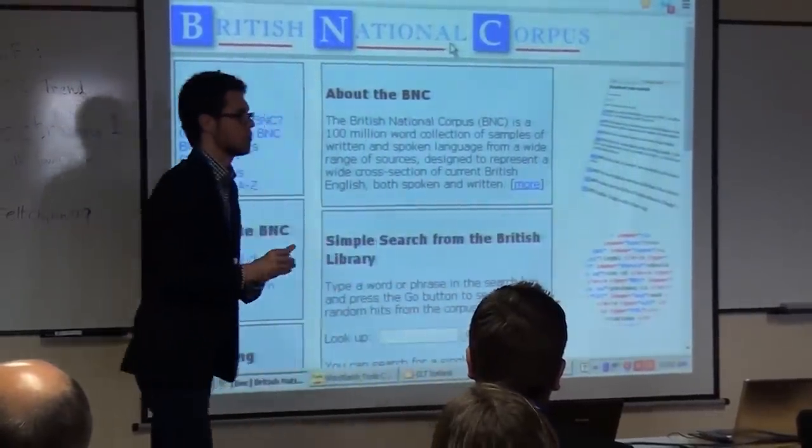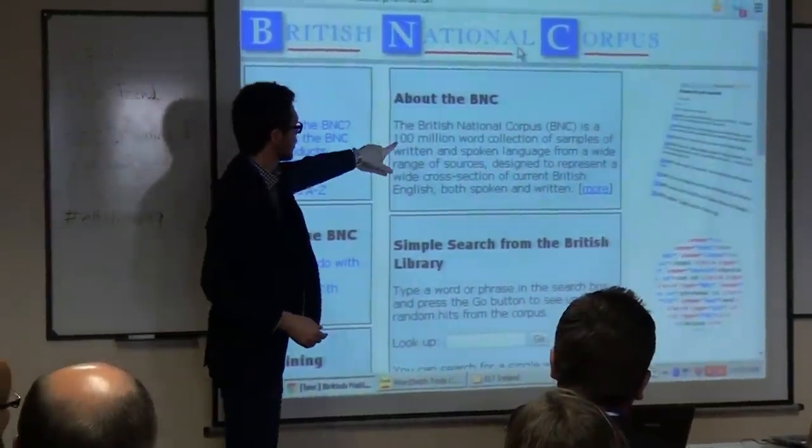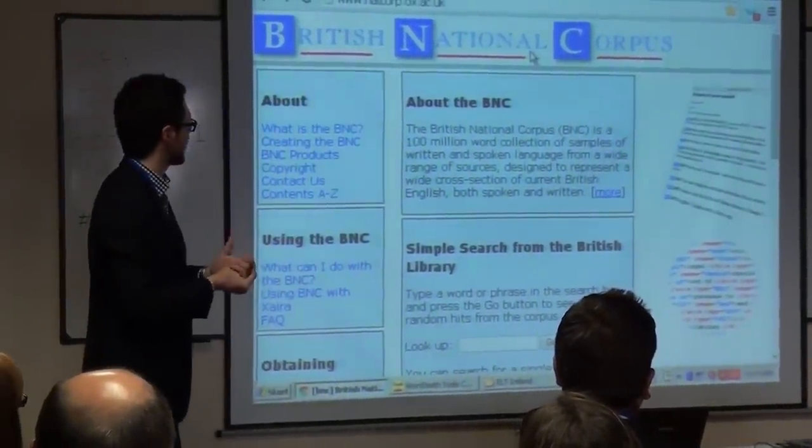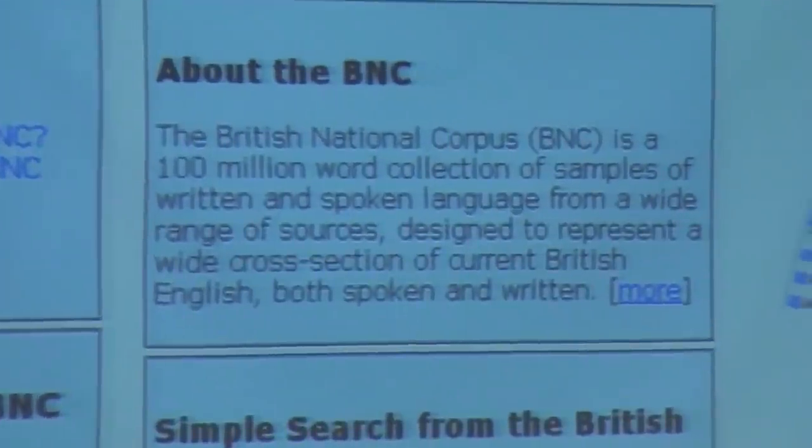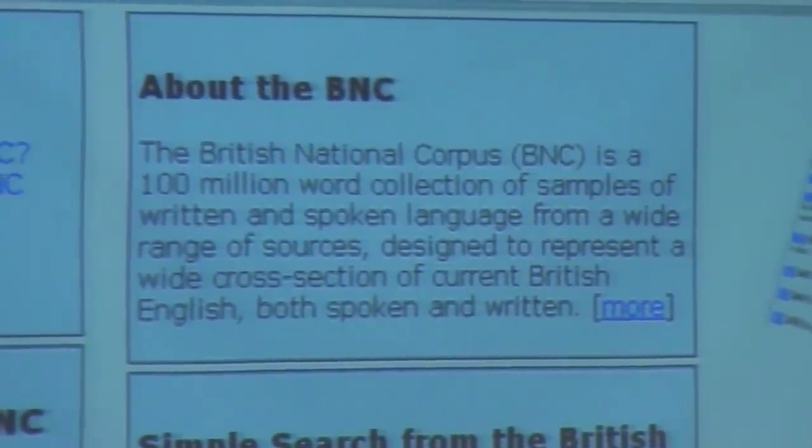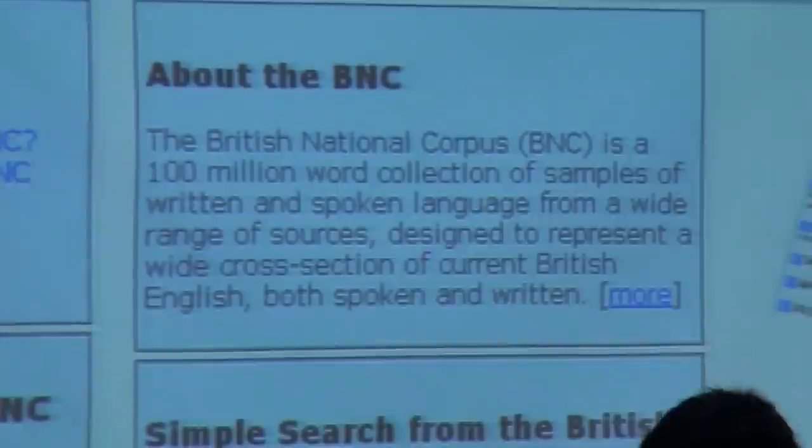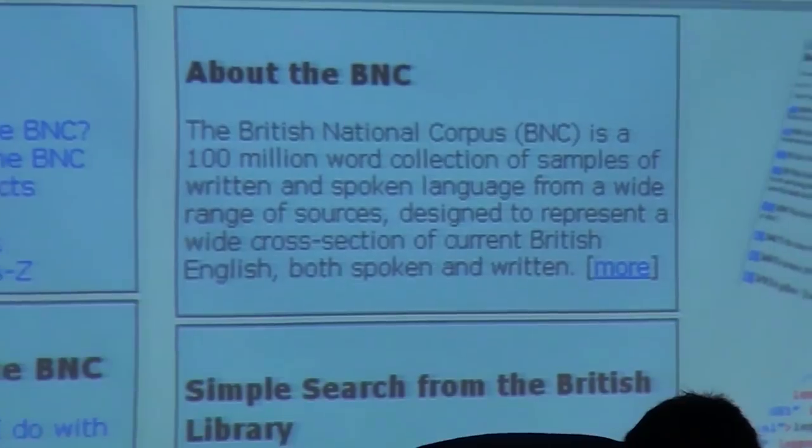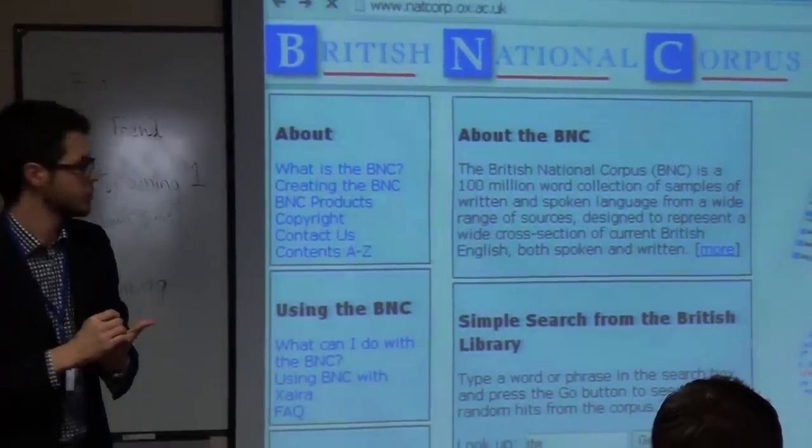And especially knowing that a few decades later, computers would be able to do that in a very efficient, much more efficient way, and providing much more reliable data. And how do we do that? How do we check those things using computers? Let's have a look at one of the websites. British National Corpus, BNC.